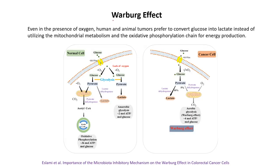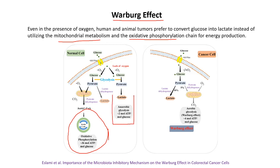The next important phenomenon is the Warburg effect. In normal cells, glucose is converted to pyruvate, which undergoes mitochondrial metabolism and oxidative phosphorylation to produce large amounts of energy. Under anaerobic conditions, pyruvate is converted to lactate, yielding lower energy. In cancer cells, however, glucose is preferentially converted to lactate instead of being used for mitochondrial metabolism and oxidative phosphorylation — even in the presence of oxygen.